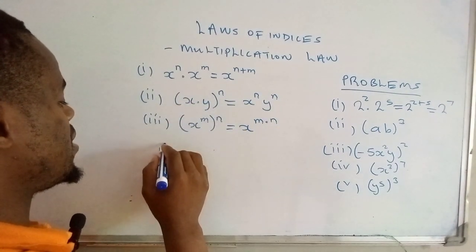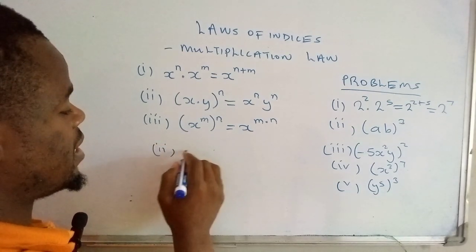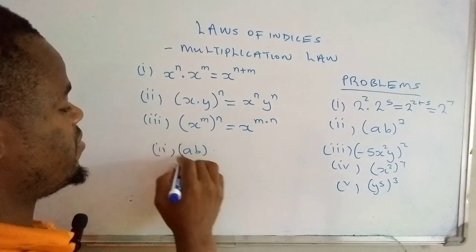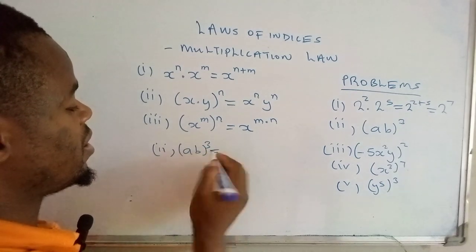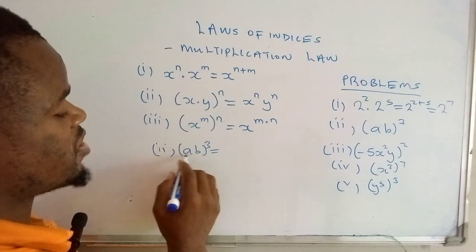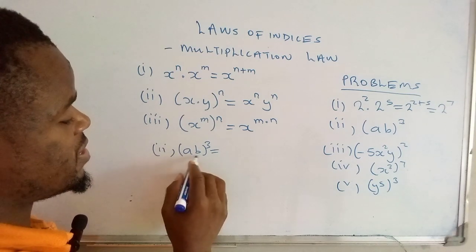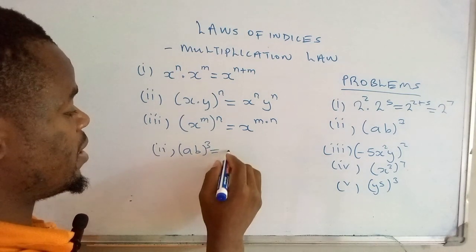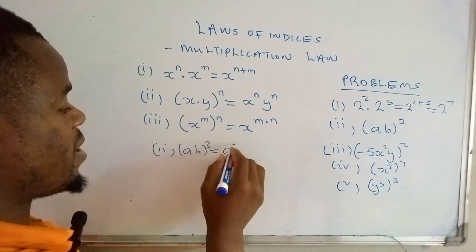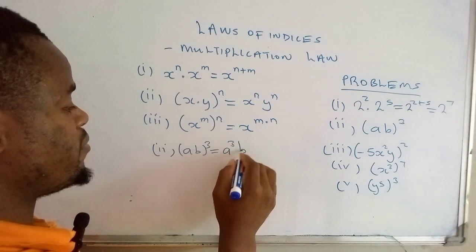I'm gonna write this one here. Say (ab) raised to the power 3, what you need to do is actually raise both of the bases to the power. So we're gonna have a raised to the power 3, then b raised to the power 3, and we're done.